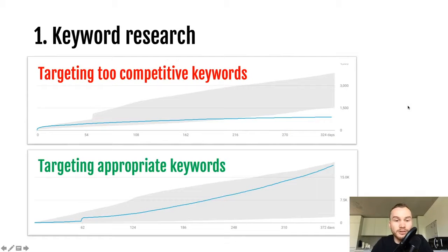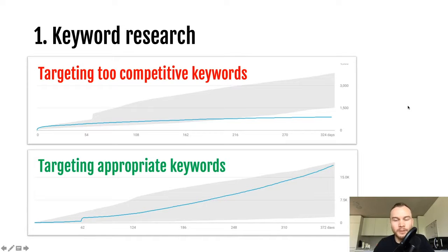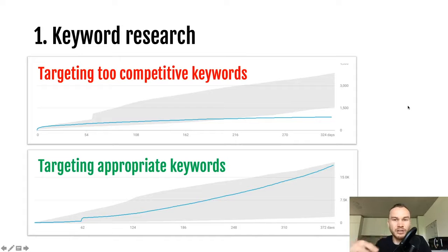The first thing you always have to do before you even decide on your video topic is keyword research. That basically means we try to find certain keywords — phrases that people type into the YouTube search bar — that we can rank for. So when somebody types in, for example, 'how to get views on YouTube,' you want your video to come up on the first page so people can actually find it and you get views.